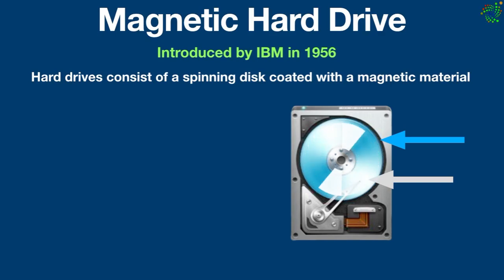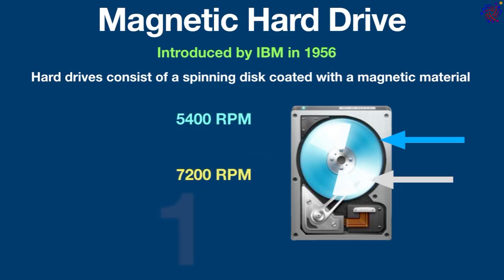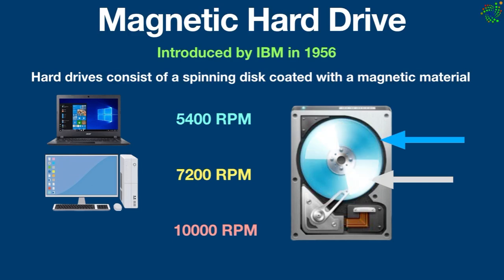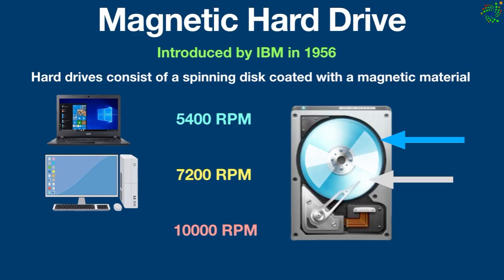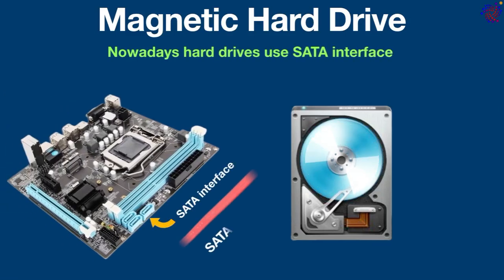The read-write head moves back and forth across the spinning disk to access different parts of data. These spinning disks rotate at very high speeds — either 5,400 RPM, 7,200 RPM, or 10,000 RPM. The 5,400 RPM hard drive is used in laptops, and the 7,200 RPM hard drive is used in desktop computers. The 10,000 RPM drive is no longer used because of high-speed solid-state drives.